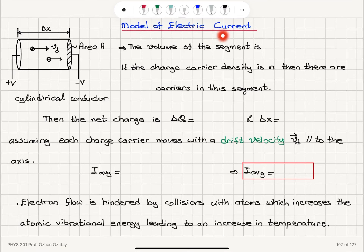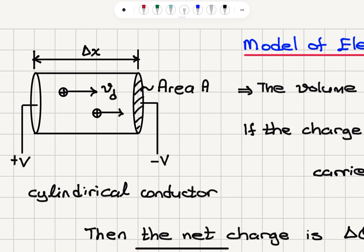Now we will talk about a model of electric current. Let's say that we have this electrical conductor that is connected to positive potential on the left side and negative potential on the right side. Therefore we see that electrons will flow towards the left side and positive charges will seem to flow to the right side, even though they actually don't move. Remember that it's the mobile electrons, not the ions — the ions are fixed in place inside the crystal.